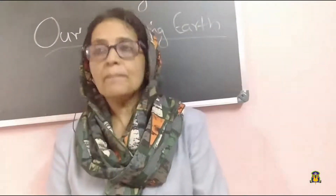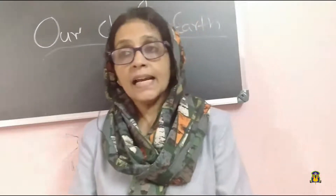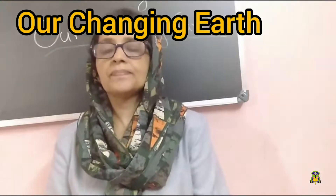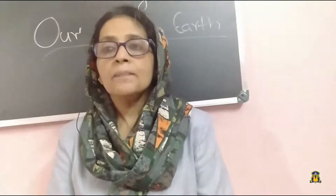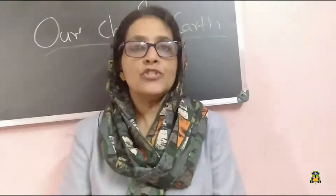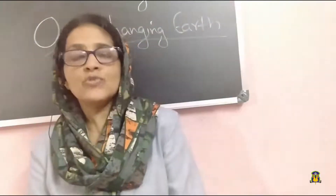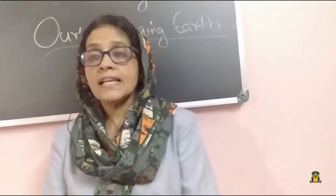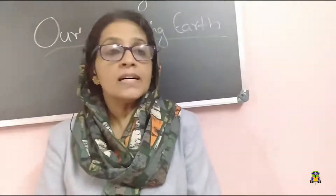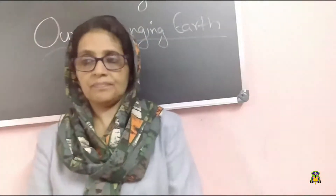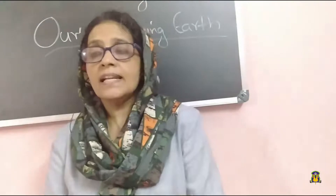Hi children, welcome back to social science class. In the previous class we had already discussed the third chapter of geography, 'Our Changing Earth.' Let us recollect what we had learned. Our lithosphere is broken into a number of plates known as lithospheric plates. This is because of changes in the molten magma inside our earth, which is moving in a circular manner.